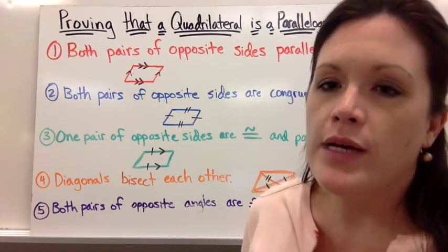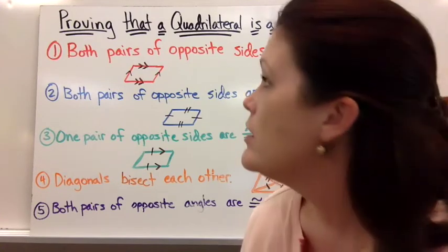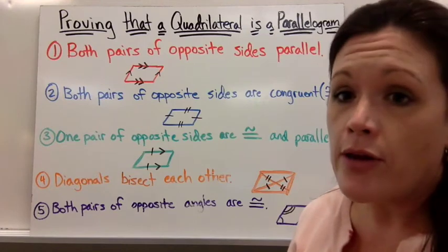Let's talk about the five different ways that we can prove that a quadrilateral is a parallelogram. The first way is to show that both pairs of opposite sides are parallel.